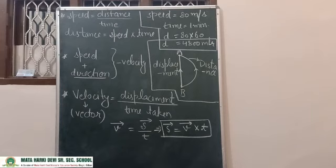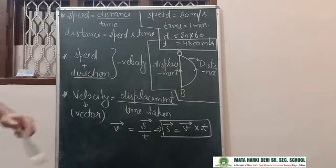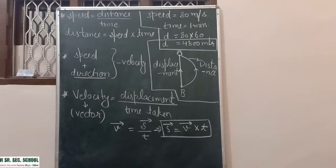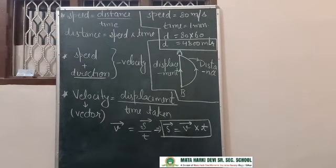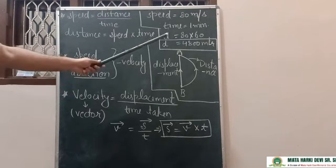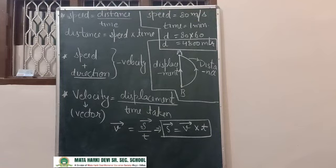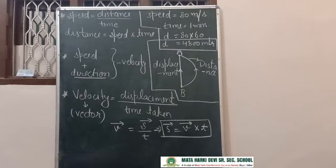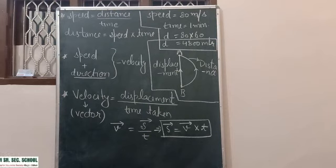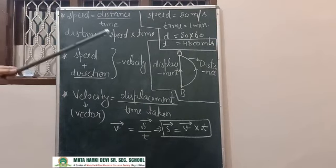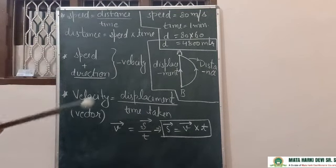If a car has a speed of 80 metres per second and it has to travel for 1 minute, calculate the distance travelled by the car. Can you calculate the distance? Yes, of course you can. From which formula? Speed is equal to distance divided by time.